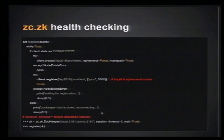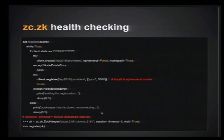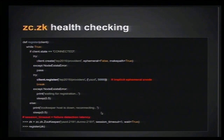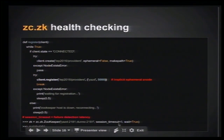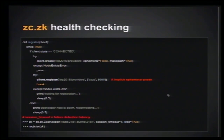What about failure detection latency? If my program is killed with kill -9 and didn't deregister gracefully, how long will it take for ZooKeeper to remove the node? The answer is the session timeout — in this example set to 5 seconds. So for up to five seconds I could be serving wrong host and port to clients from the catalog. That's something to consider in such topologies.